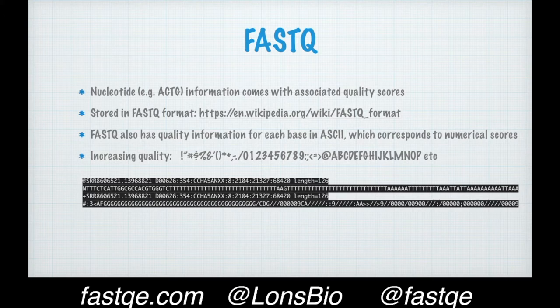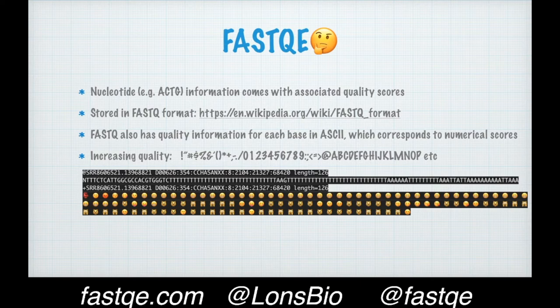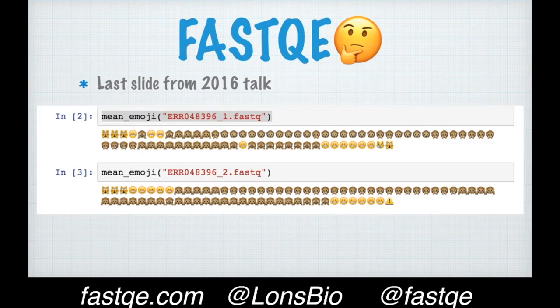FastQ files include nucleotide information and usually associated quality scores, and those quality scores are encoded in ASCII values. The thing that I added to my talk was to say, well, rather than using ASCII values to encode those quality scores, why not use emoji? Since I went that far, I thought I might as well make something useful. So my last slide was a little Python script that would work out the average quality per base pair position, and then print that as emoji as shown in a Python notebook.